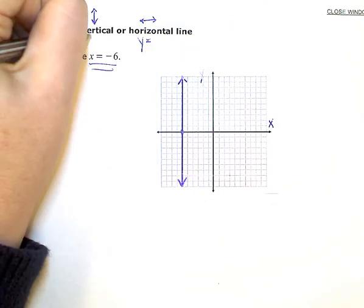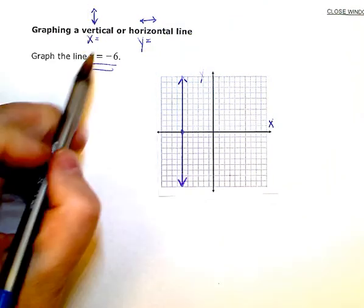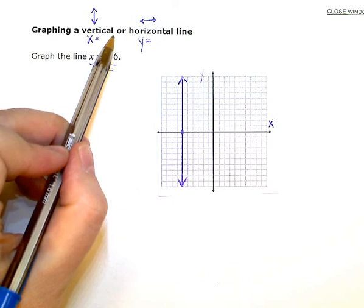Vertical lines are x equals and then your intercept, or the constant, where you cross the axis.